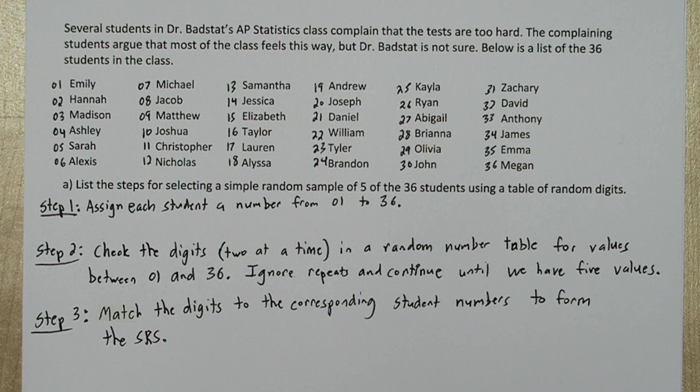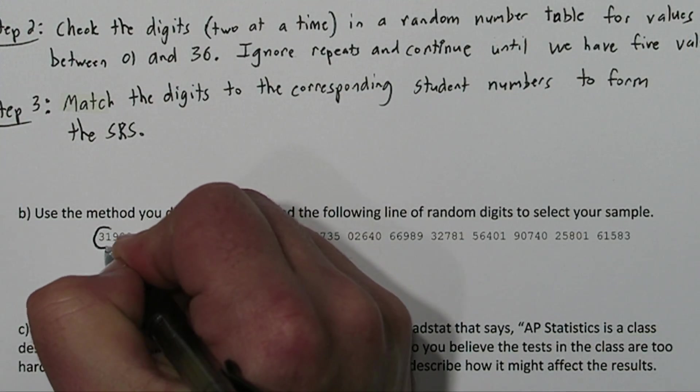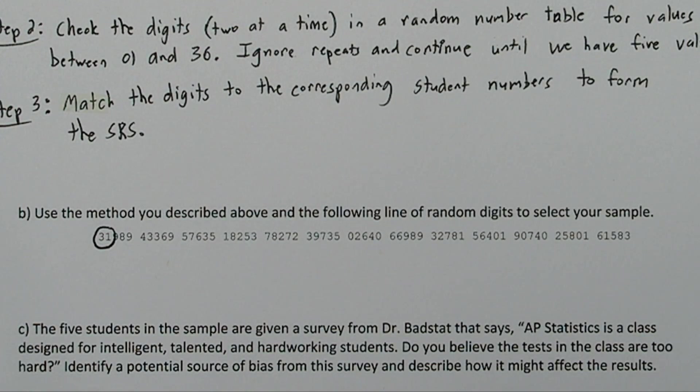Alright, now we're ready to look through our table. The first two digits are 31. Since that's between 01 and 36, we'll circle it. It's our first selection.